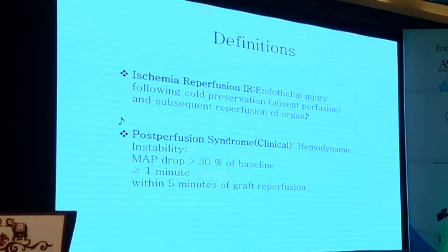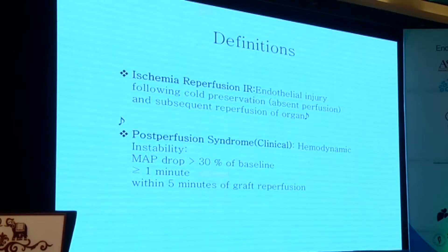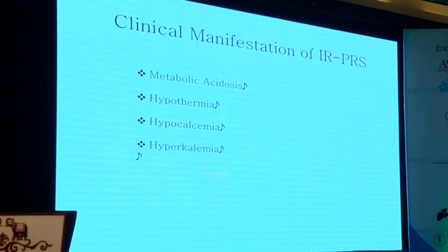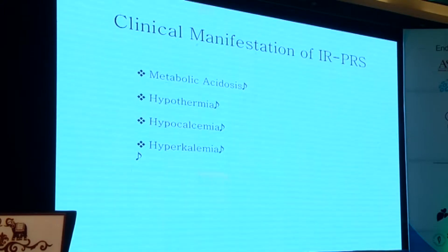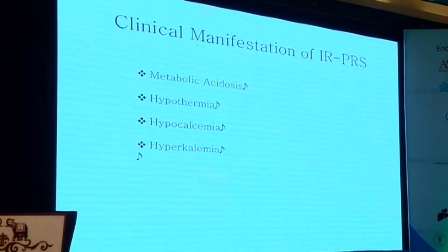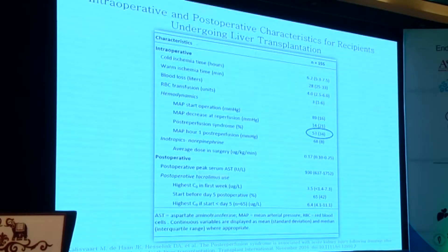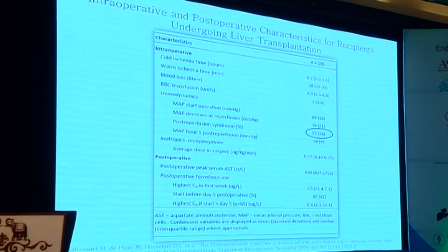As we think about the clinical manifestations, we have to keep in mind that our anesthesiologists are already doing things to try to prevent what we've defined as post-perfusion syndrome. The clinical manifestations of both ischemia reperfusion and post-reperfusion syndrome relate to metabolic acidosis, hypothermia, hypocalcemia, and hyperkalemia. In a study of 155 patients from the Netherlands, 54 of them — 34% — experienced clinical manifestations of post-reperfusion injury, so it's quite common with deceased donor transplants.